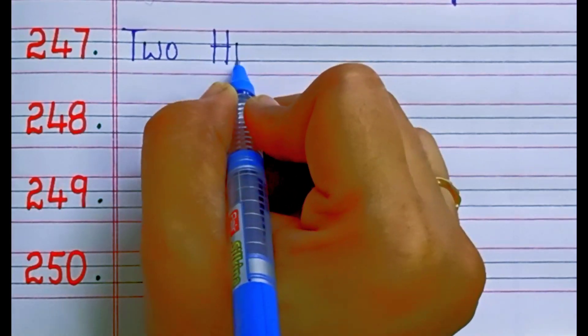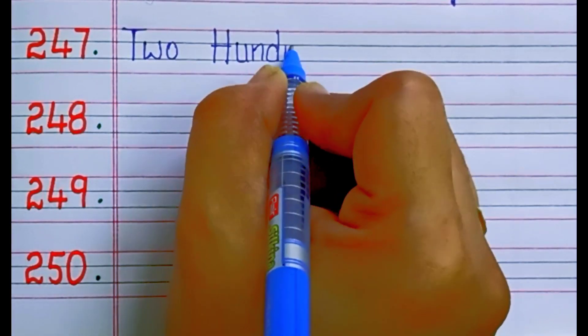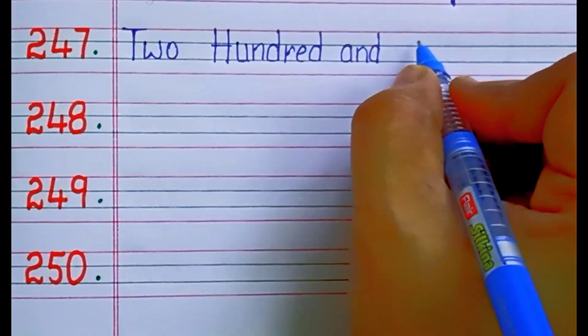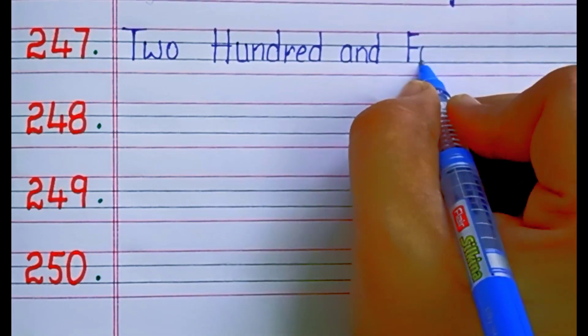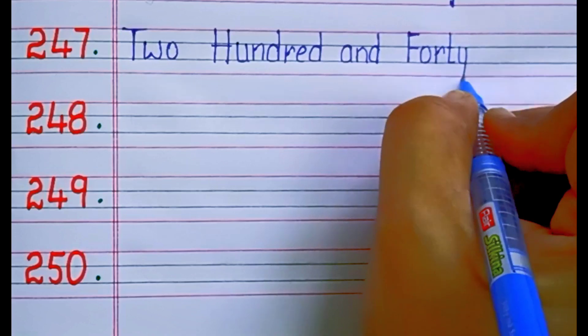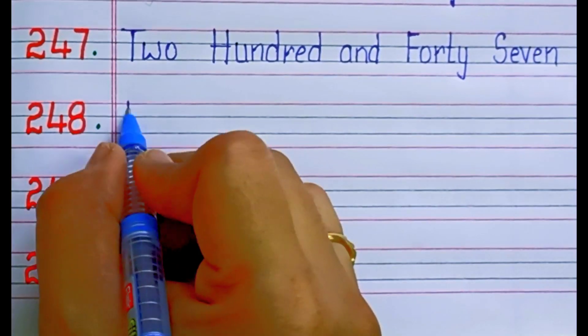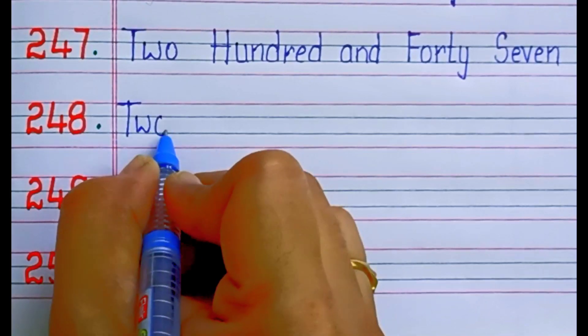247. Two hundred forty-seven: F-O-R-T-Y, 40. S-E-V-E-N, 7.